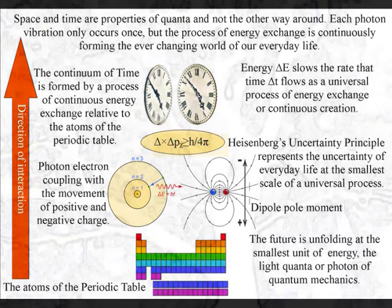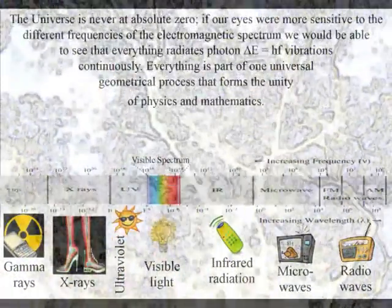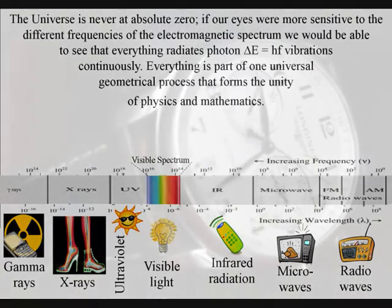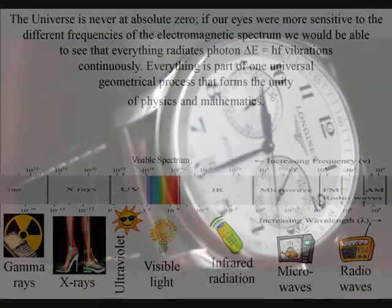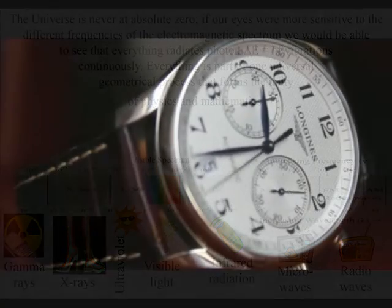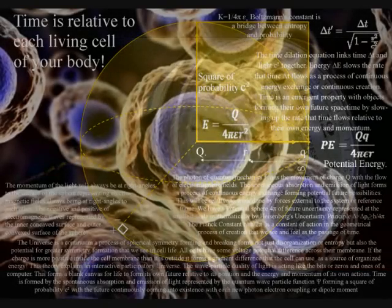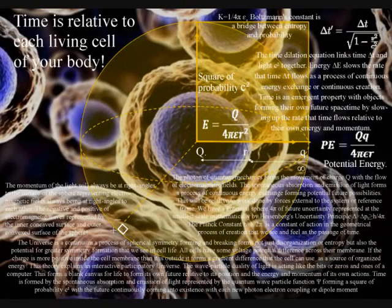If our eyes were more sensitive to the light of the electromagnetic spectrum, we would be able to see that everything is radiating light with the continuous exchange of photon energy. This continuous process of energy exchange forms the continuum of time with the momentum and the geometrical structure for the biological dynamics of cell life.